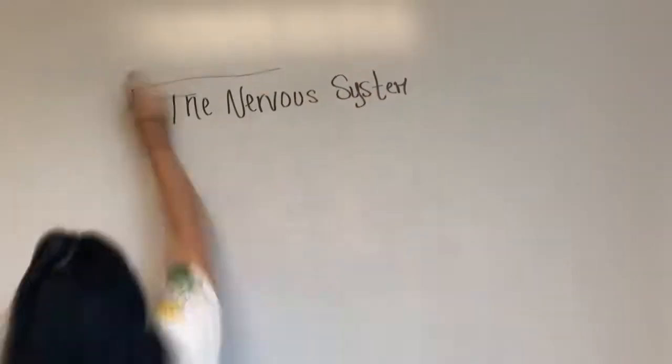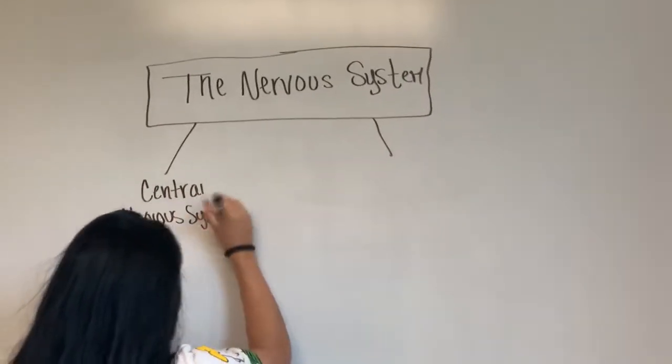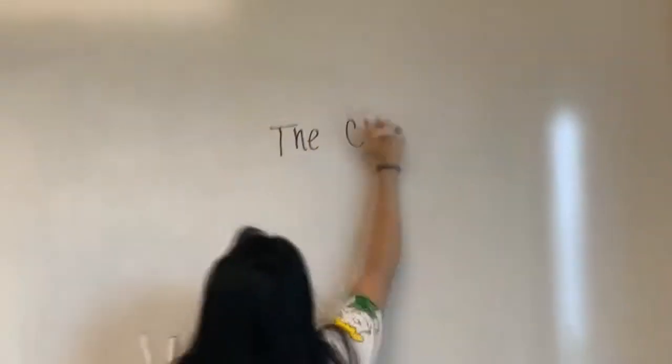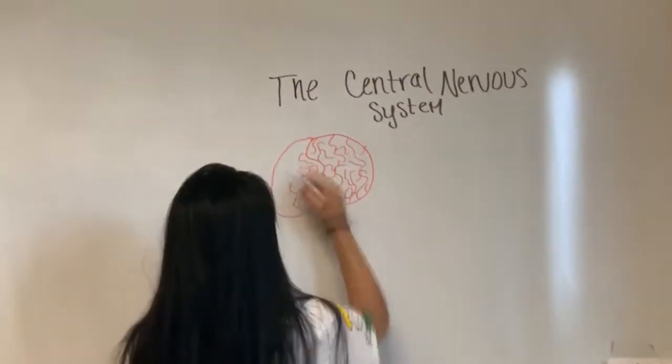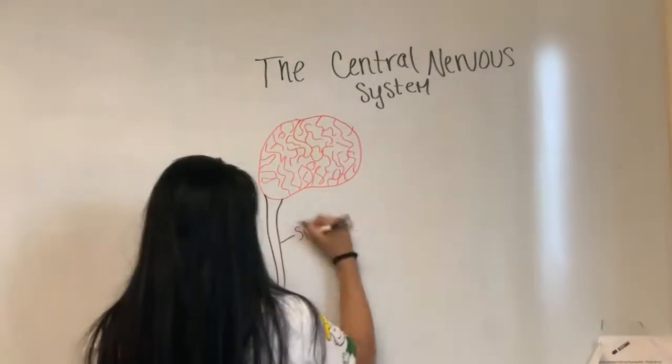The nervous system has two subdivisions, the central nervous system and the peripheral nervous system. The central nervous system contains our brain and spinal cord.